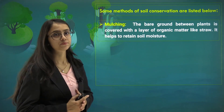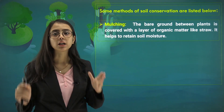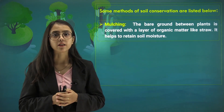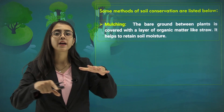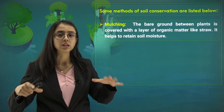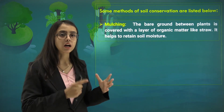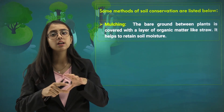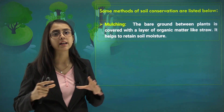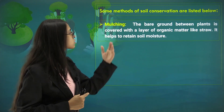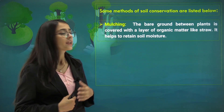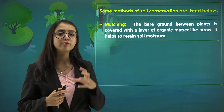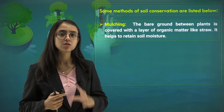The first method is mulching. Mulching refers to an activity where the bare ground between plants is covered with a layer of organic material like straws. It helps in retention of moisture in the soil.